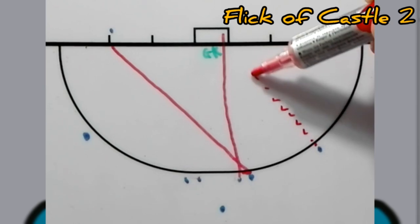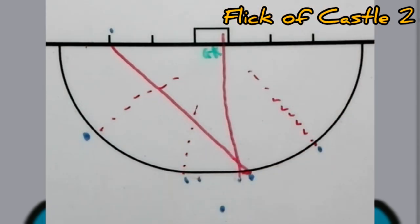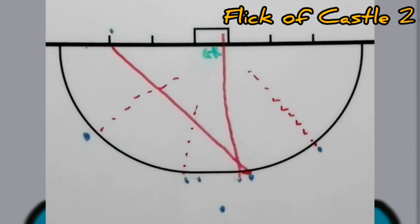Exactly the same, this player can run in for rebound, can run in for rebound, can run in for rebound, for when the keeper saves it. But this is variation number three, flick off castle two.